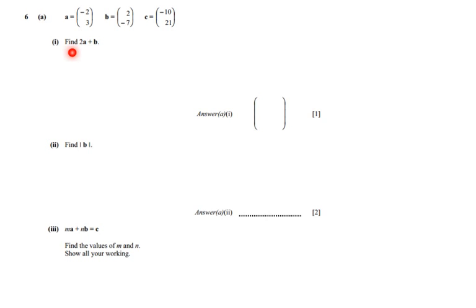The first question says find 2A + B. It's relatively straightforward. I have to multiply vector A by a scalar 2, then add that vector with vector B. So if I multiply everything in A by 2, that's going to be (-4, 6), because -2 times 2 is -4, 3 times 2 is 6. And (2, -7) is B, so I just copied vector B.